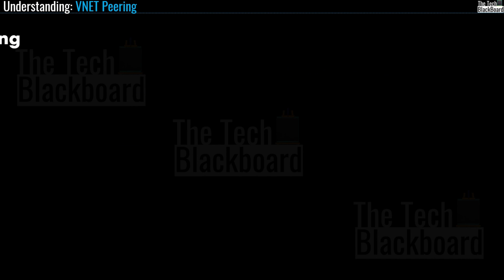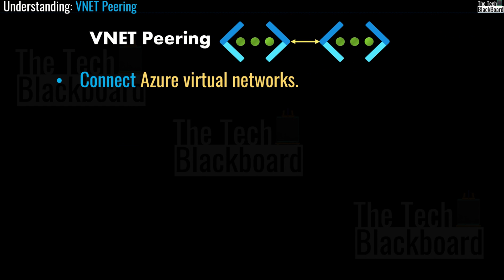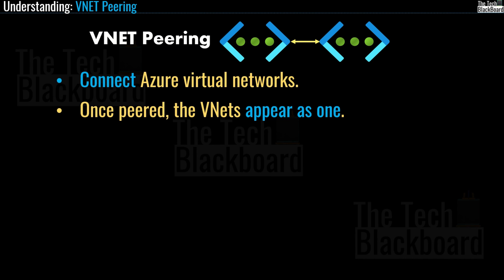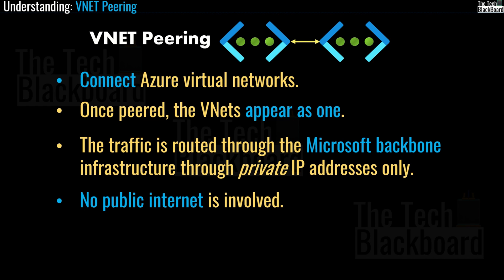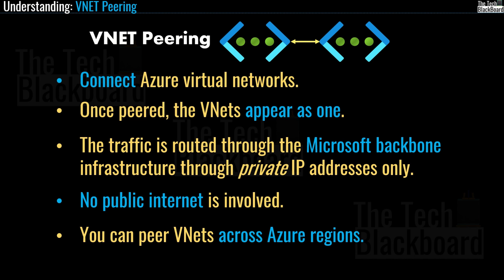Now let's focus on Azure VNet Pairing. Azure VNet Pairing enables you to seamlessly connect Azure Virtual Networks. Once you have paired multiple Azure Virtual Networks, the VNet appears as one for connectivity purposes. The traffic between virtual machines in the virtual networks is routed through the Microsoft backbone infrastructure — similar to traffic routed within the same virtual network through private IP addresses only. No public internet is involved, and you can pair virtual networks across Azure regions.